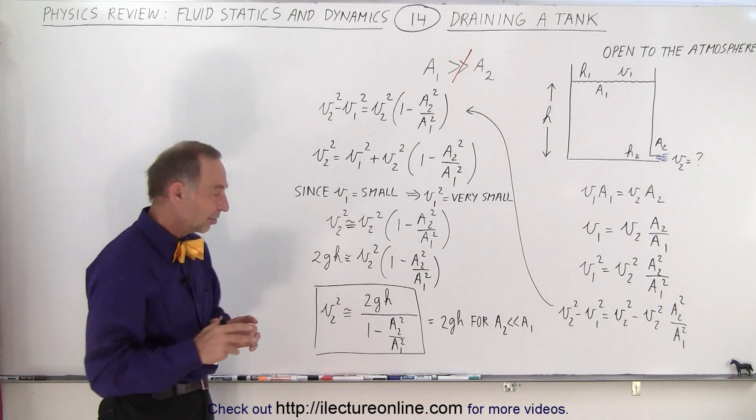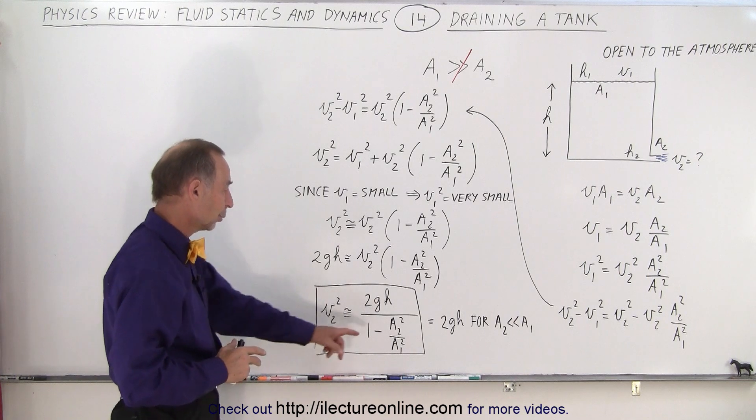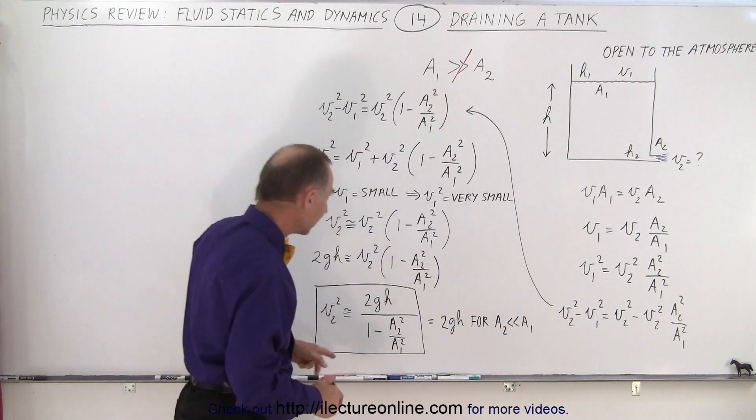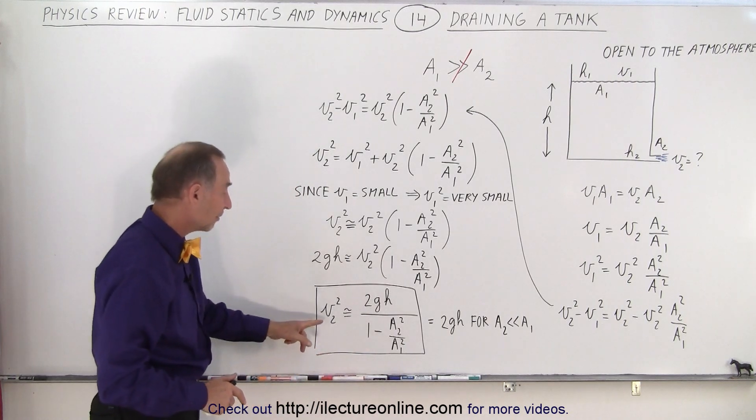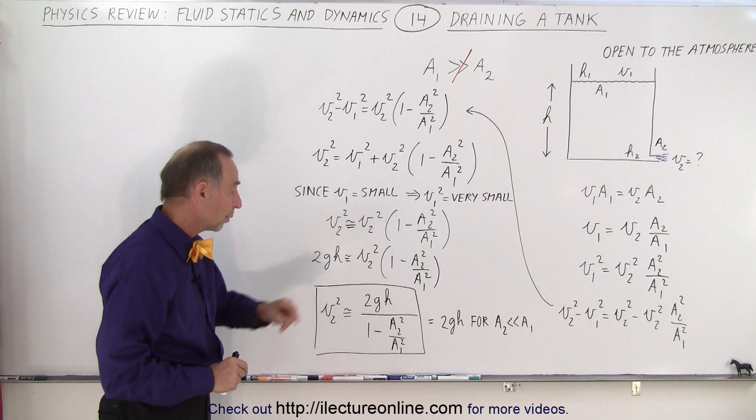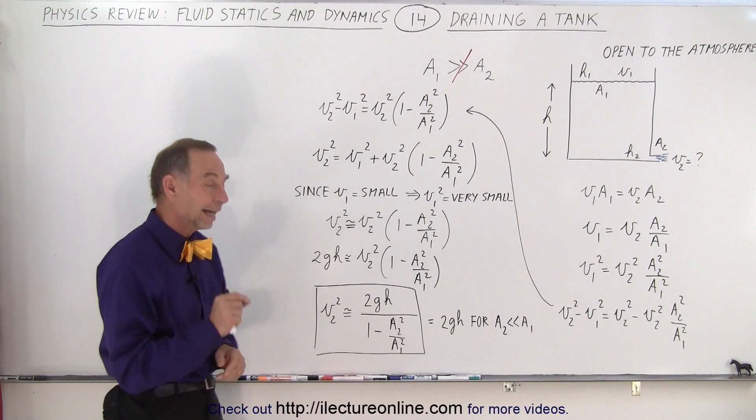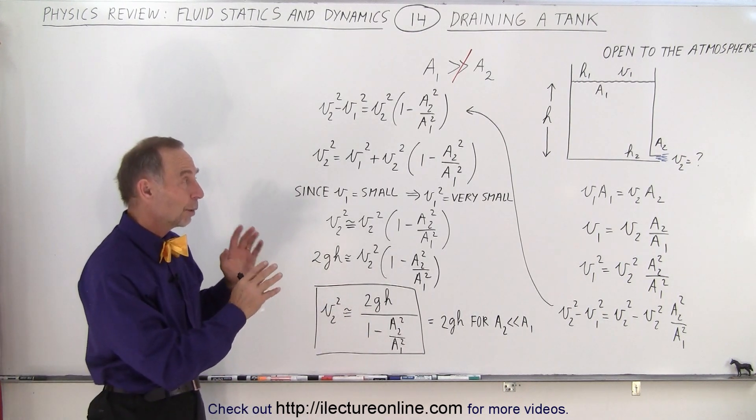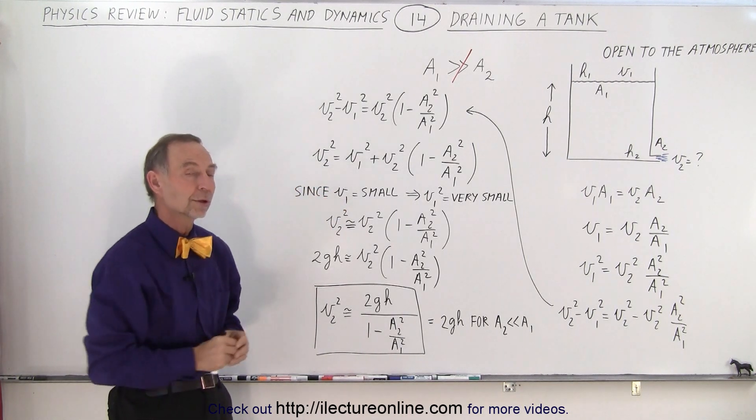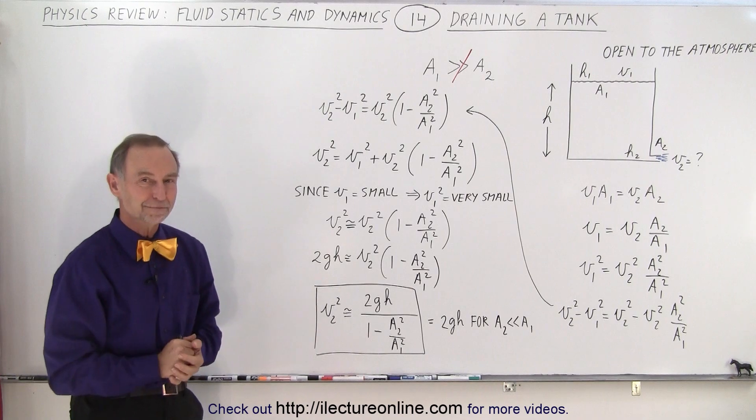But if they're not that different, in other words if a2 is not much much smaller than a1, then you have to take it into account, and then v2 will be slightly bigger than the square root of 2gh. And that is the way which we look at draining a tank when we don't have an enormously big opening at the top and a very tiny hole at the bottom. And that is how it's done.